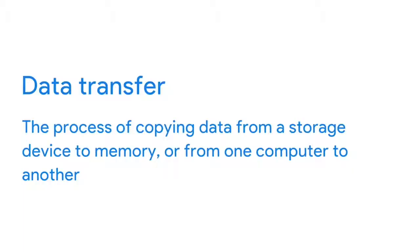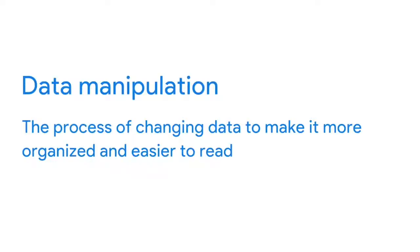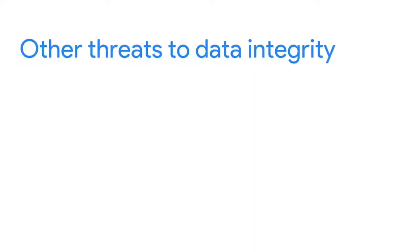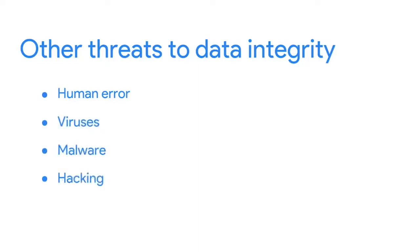There's also the issue of data transfer, which is the process of copying data from a storage device to memory, or from one computer to another. If your data transfer is interrupted, you might end up with an incomplete dataset. The data manipulation process involves changing the data to make it more organized and easier to read. Data manipulation is meant to make the data analysis process more efficient, but an error during the process can compromise that efficiency. Finally, data can also be compromised through human error, viruses, malware, hacking, and system failures.